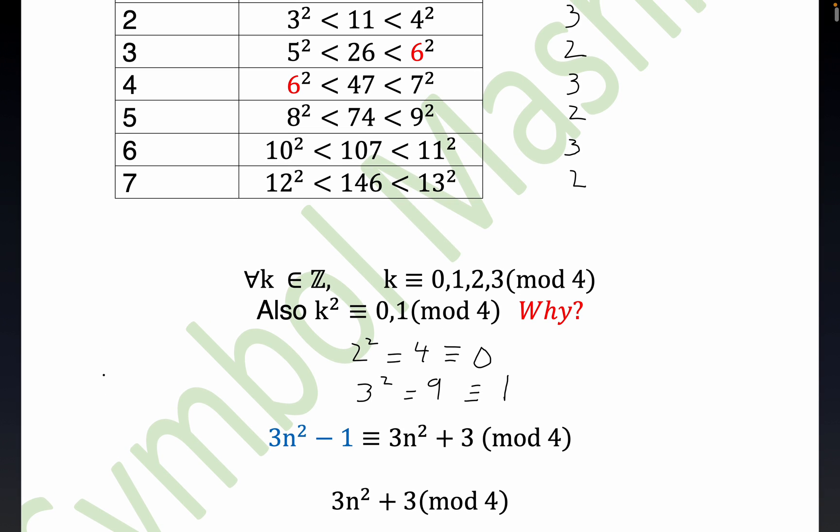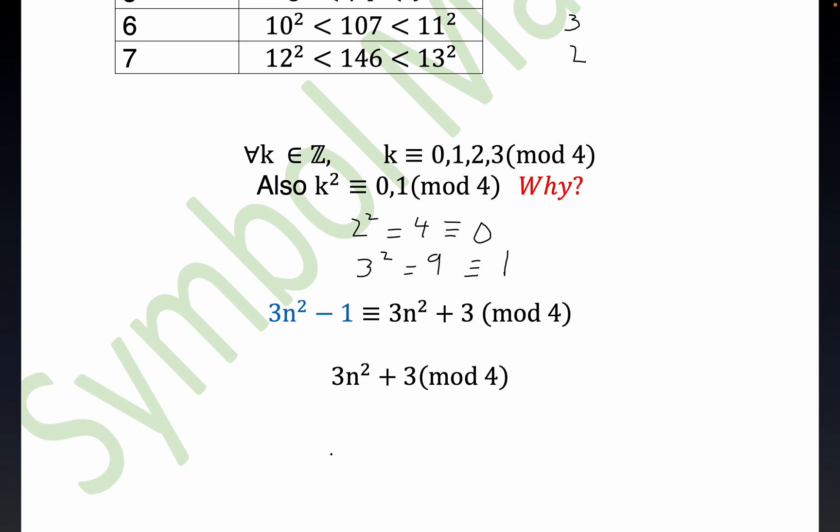Now, so let's, here's our original expression. Now notice we can rewrite it. We can rewrite it like this. Why is that? Because minus 1 is congruent to 3 modulo 4. Minus 1 minus 3 is negative 4. That's divisible by 4. You can think of 3 minus negative 1 is 4, which is certainly divisible by 4.